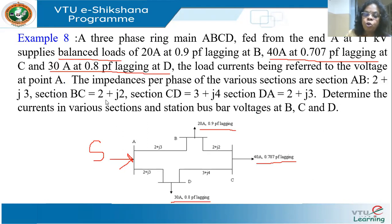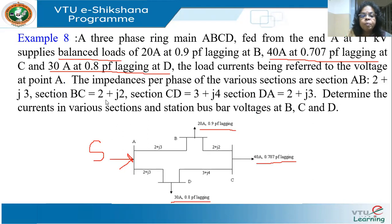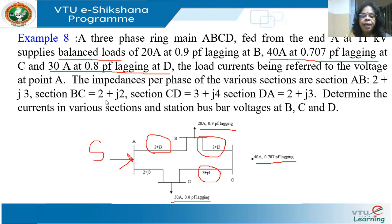From the data, the first thing you have to do is draw the figure. You have A, B, C, D — just draw a loop. You can draw it as a circular loop. The impedances of the various sections are: AB is 2+j3, BC is 2+j2, CD is 3+j4, and DA is 2+j3.